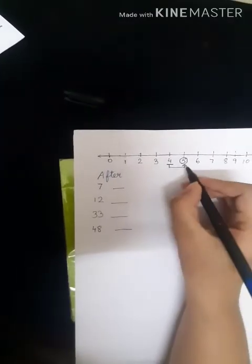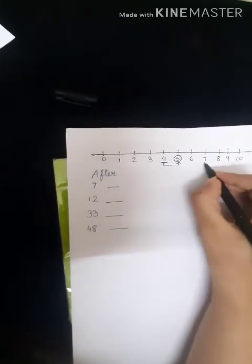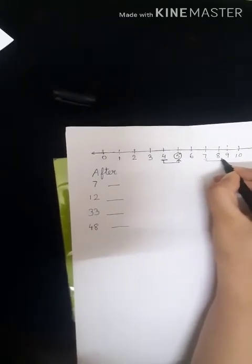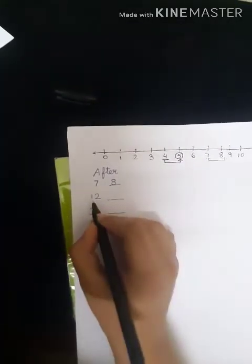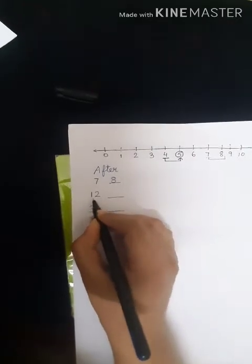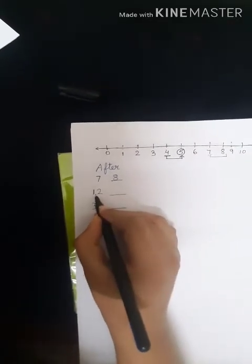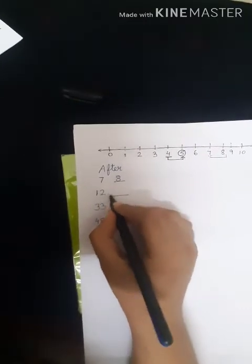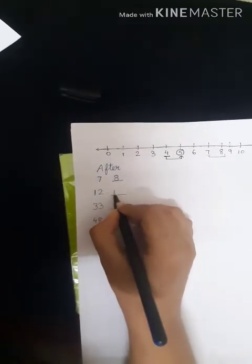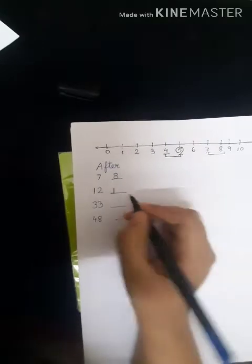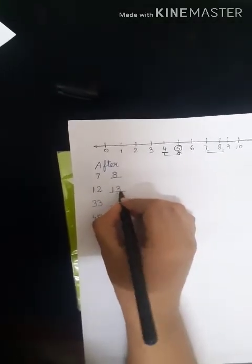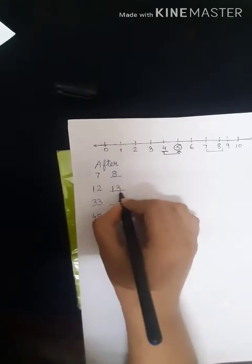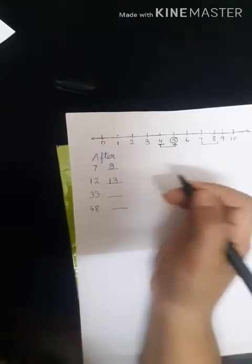So as you can see, let us look at number 7. What number comes after 7? Number 8. So here we are going to write number 8. Now let us look at the second one, number 12. Here the first digit remains the same. So here if it is 1, here also it is going to be 1. Now what comes after 2? 3. So what comes after 12? 13.